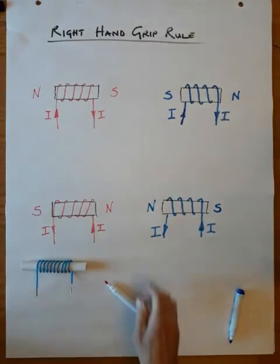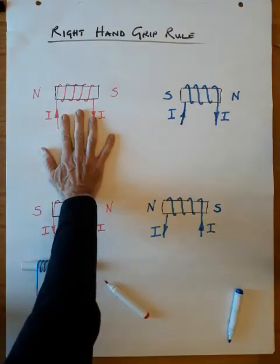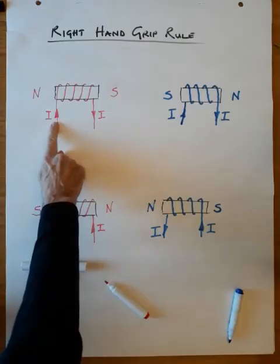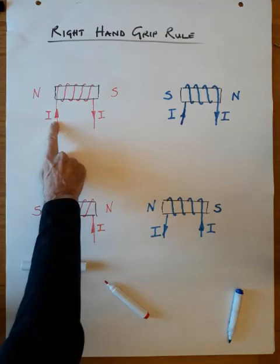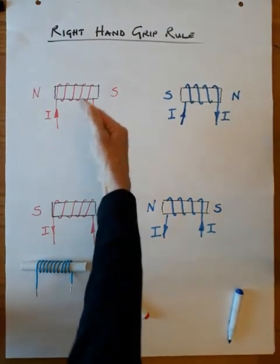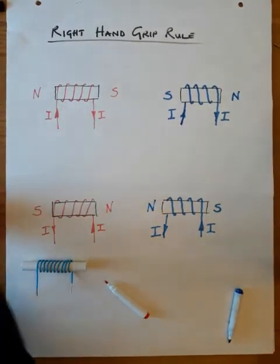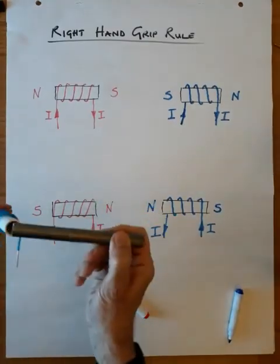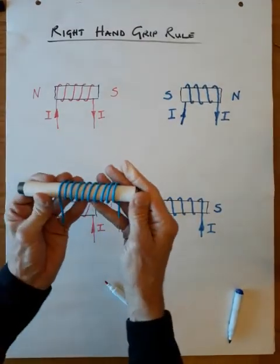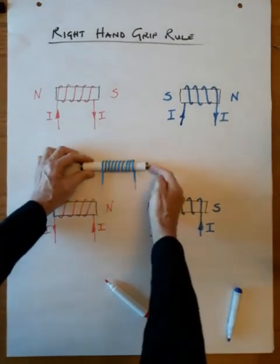To change the strength of any of the electromagnets we could do one of three things: one is increase the amount of current — we'd probably increase the voltage, which will increase the current by Ohm's law; two is increase the number of turns — each time we wrap the conductor around, that is a turn; and finally, three, we could make the core out of iron.